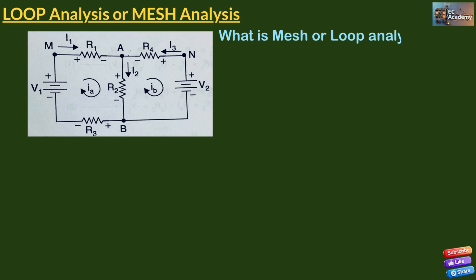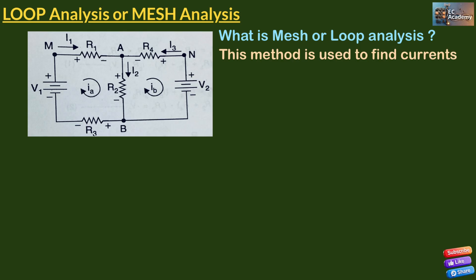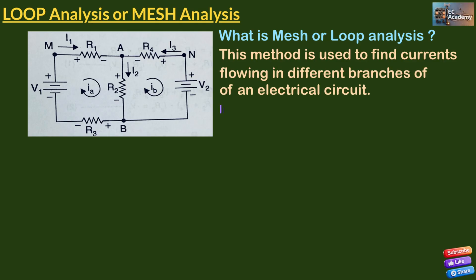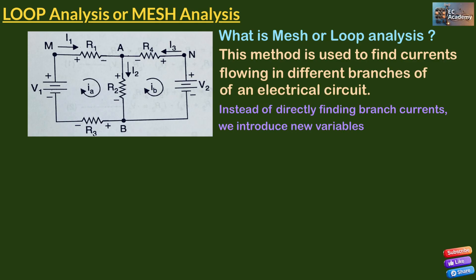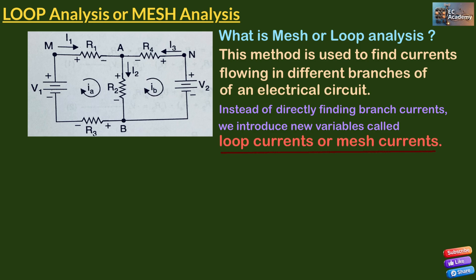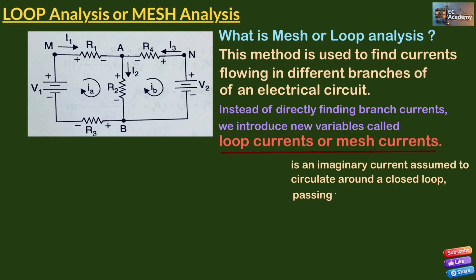So what is mesh analysis or loop analysis? This is a method that is used to find currents flowing in different branches of an electrical circuit. Instead of directly finding branch current, we introduce new variables called loop current or mesh current. A loop current is an imaginary current which is assumed to circulate around a closed loop that will pass through all components of the loop.